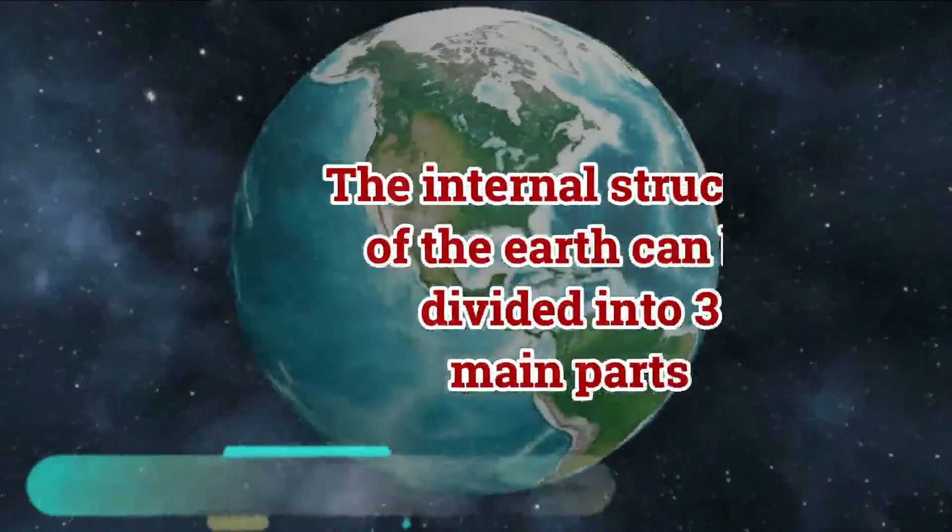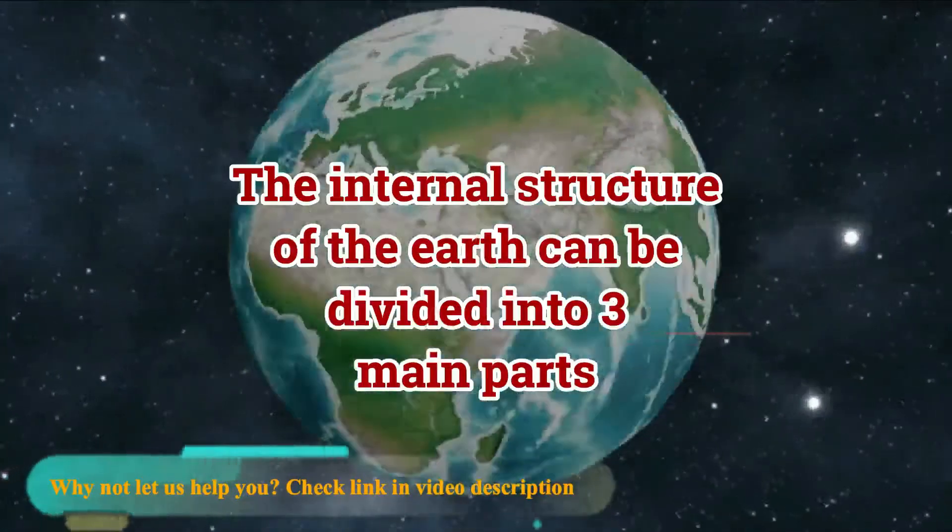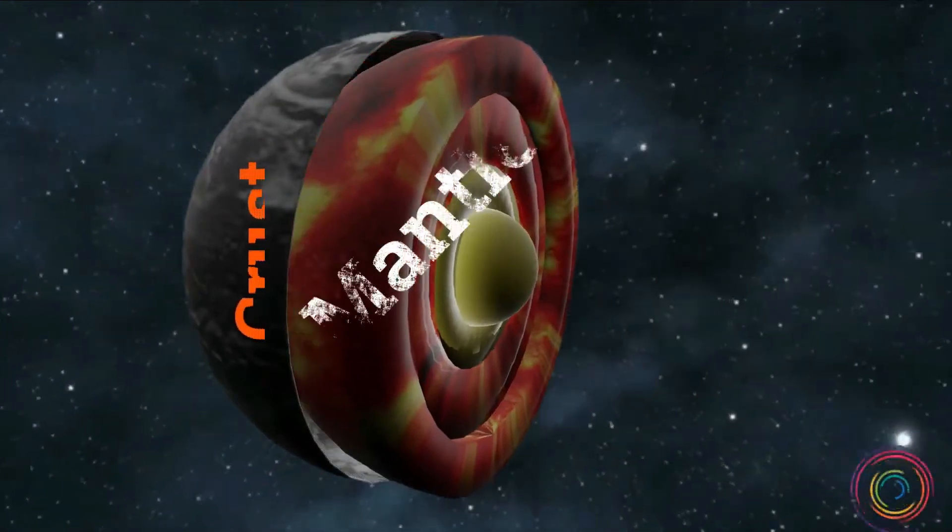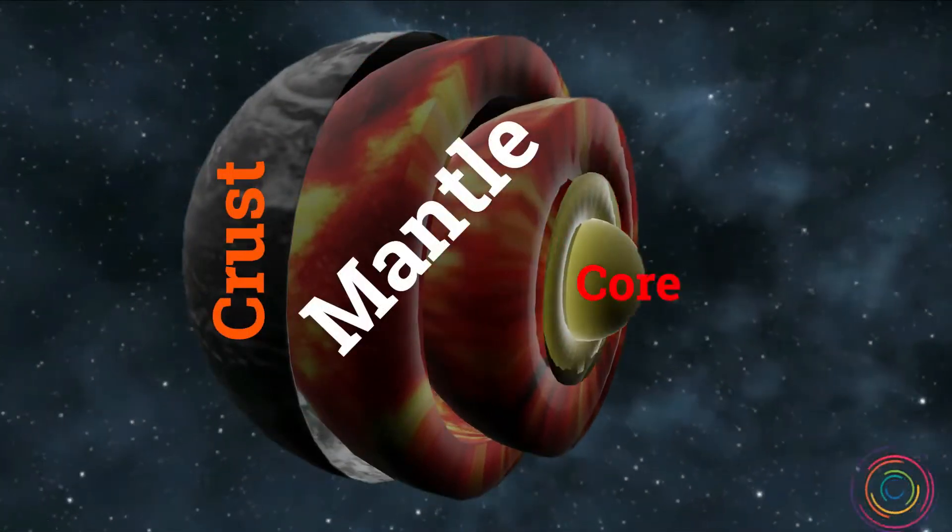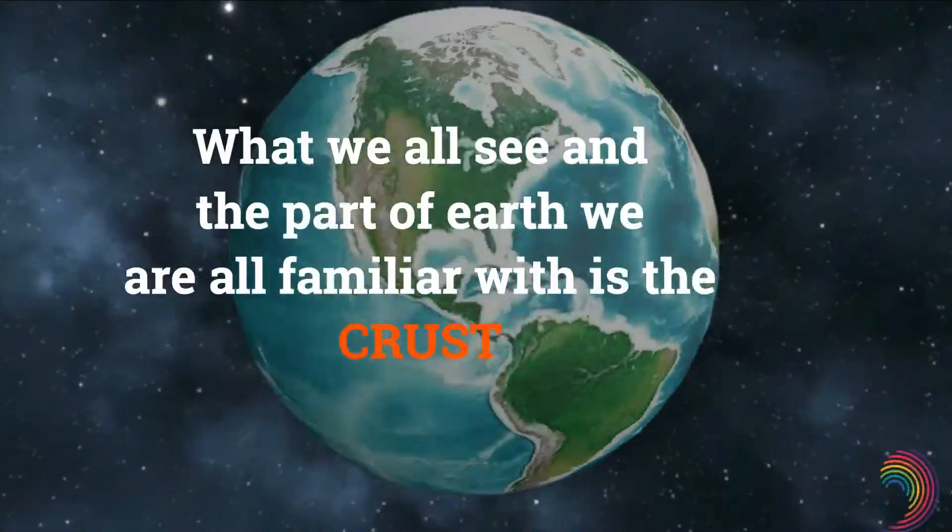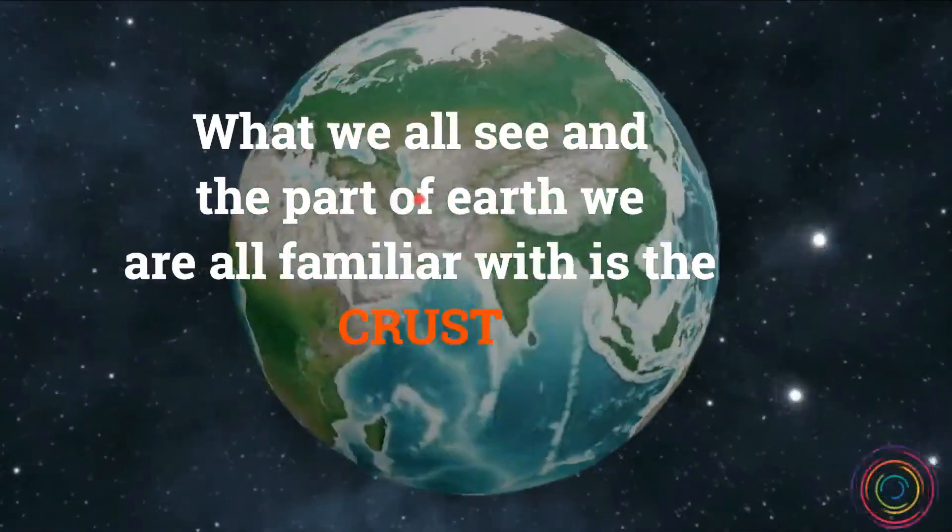The internal structure of the Earth is what we are used to hearing which are the structures inside the Earth. The internal structure of the Earth can be divided into three main parts which are the crust, the mantle and the core. What we all see and the part of the Earth we are all familiar with is the crust.